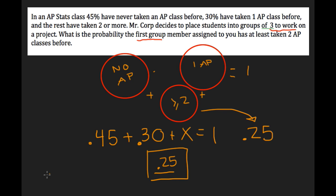Geometric calculates the number of failures before you get a success. We're looking at the first group member in our group of three being someone who has had two or more AP classes. In geometric, you never care what happens after that. So it's a simple problem that's tricky by wording — a lot of students got stuck on it last year. Strip it down, make it easy, and ignore all the deceitful elements.